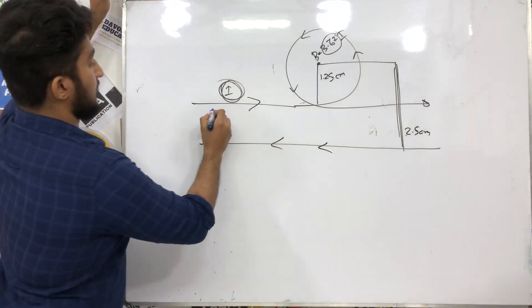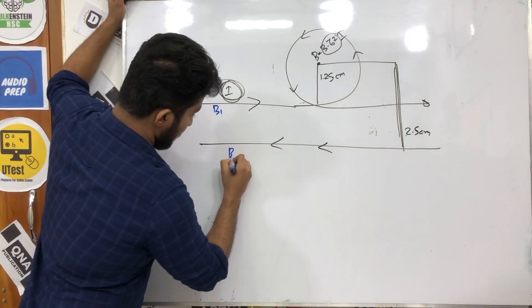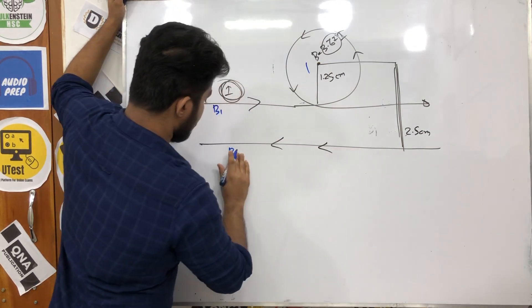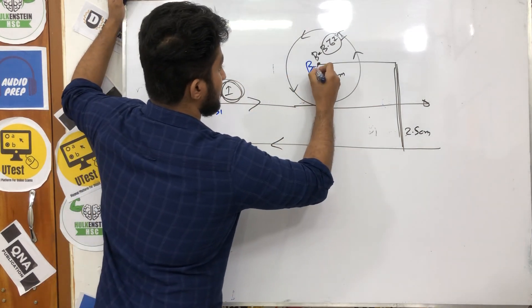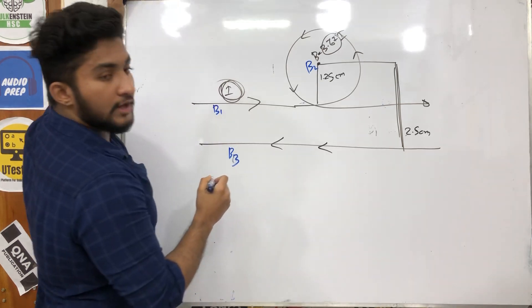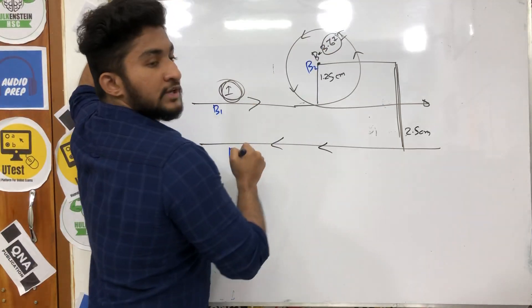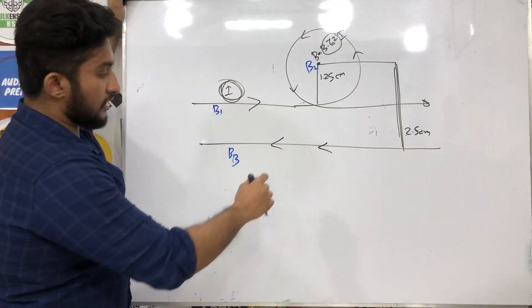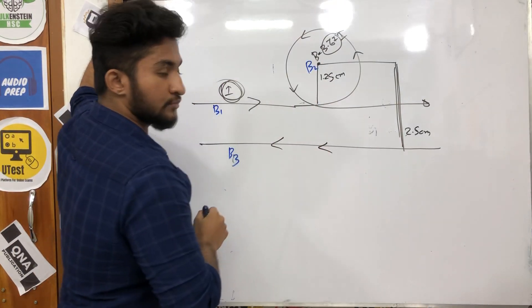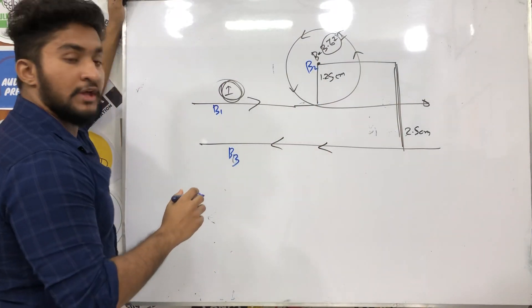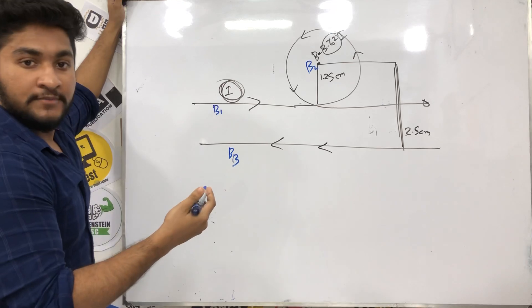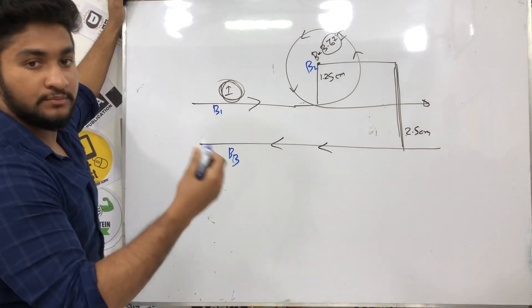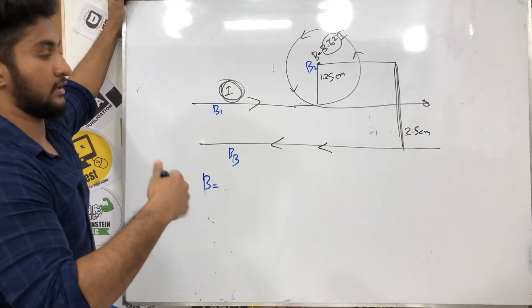So B1, B2, B3, B2 — okay? This is the same. Total B is the same: B1 plus B2 plus B3, minus B2 plus B3.